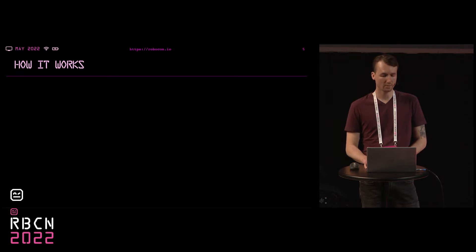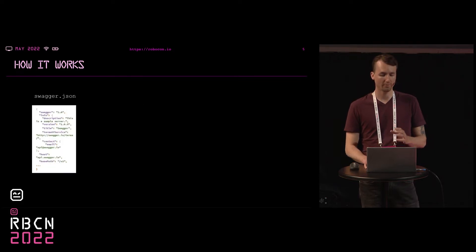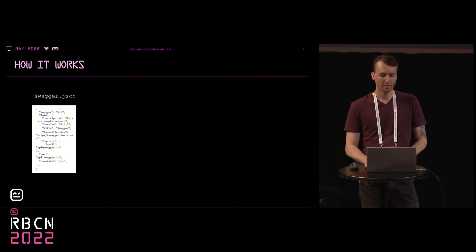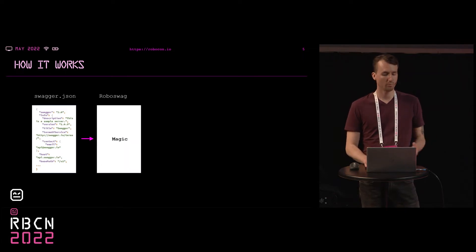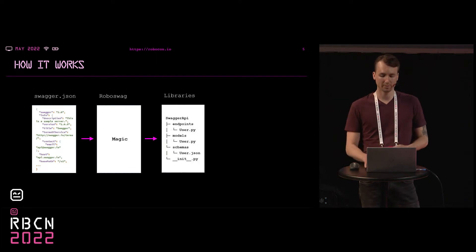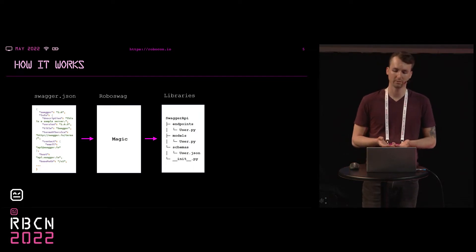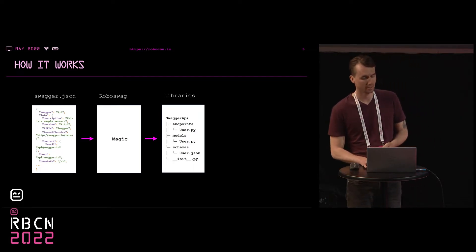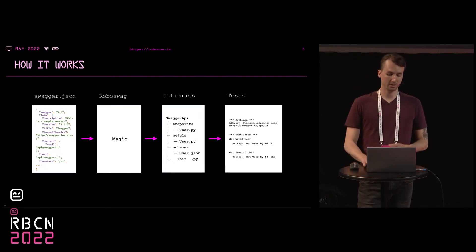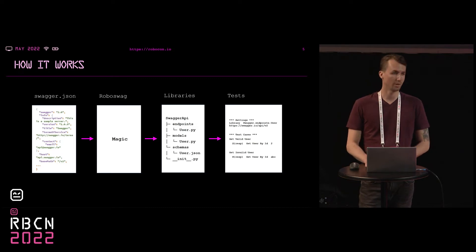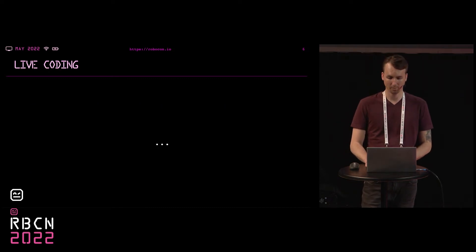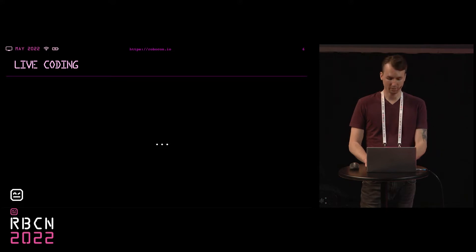So how does it work? First you need to have the OpenAPI specification file of your API. Then you run RoboSwag, which reads this file and generates Python libraries out of it that contain most of the information needed to write the tests. Then you just use those libraries to write tests. That's it.